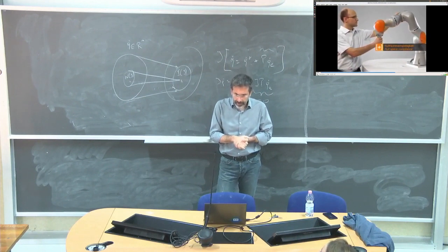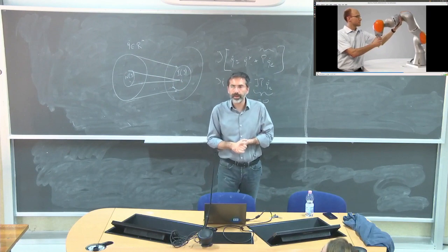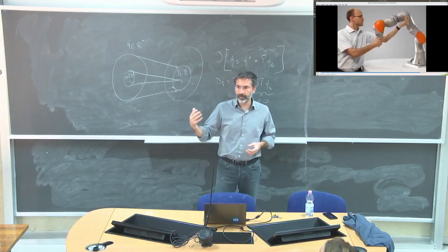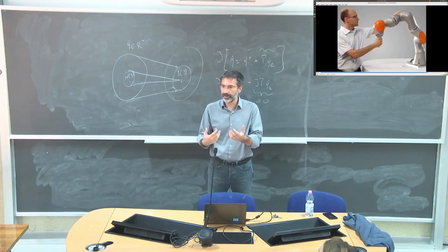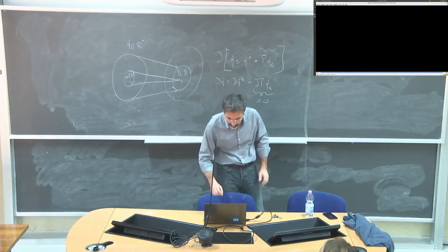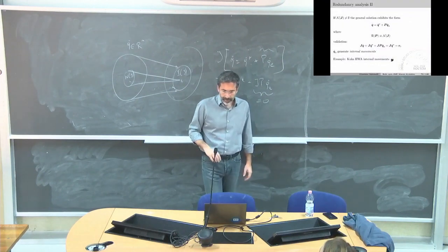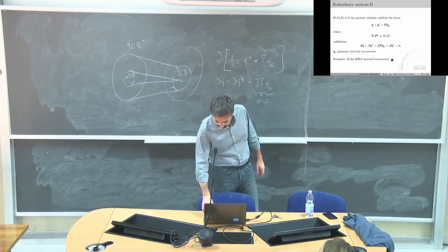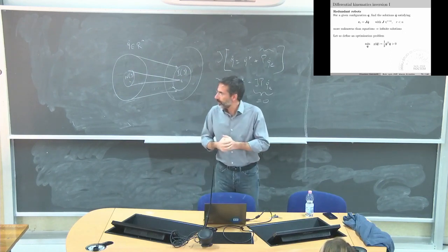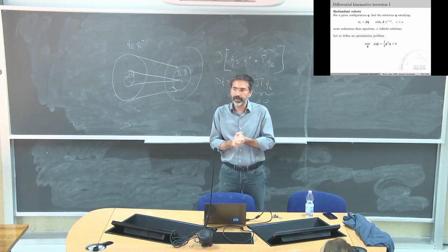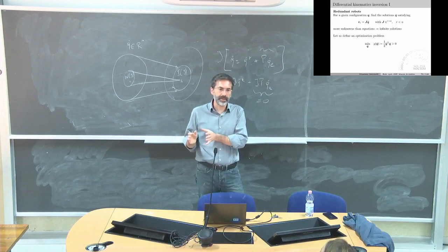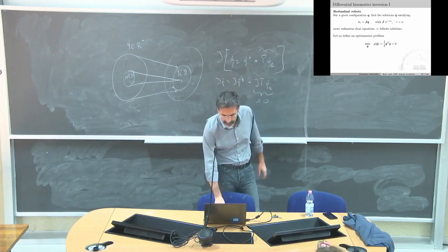Now, how can I handle redundancy? I will rewrite the same equations we saw for systems of linear equations, but with a robotics perspective. The interpretation changes but the equations are exactly the same. For a given configuration, I want to find Q-dot that satisfies J·Q-dot = V_E, knowing I have more joints than degrees of freedom to control in the end-effector — more unknowns than equations — so I have infinite solutions.